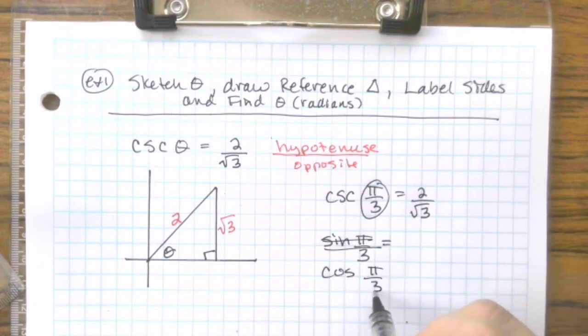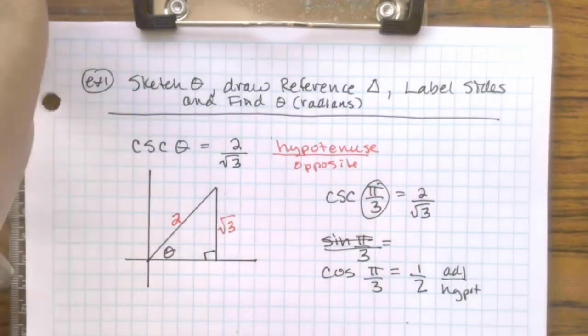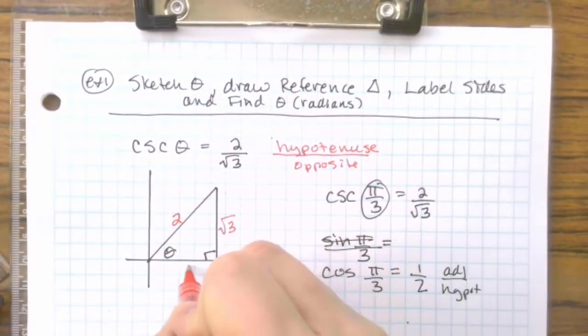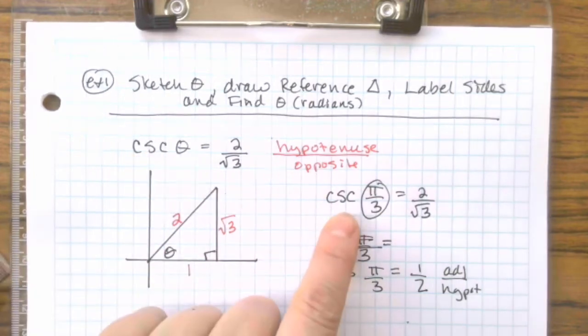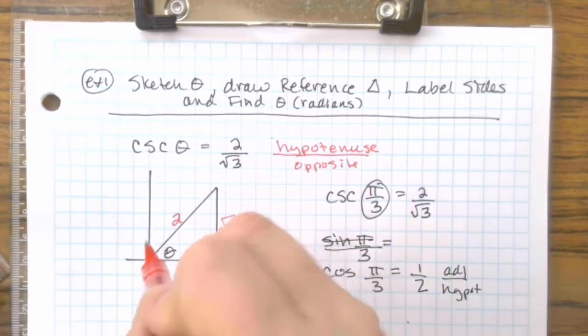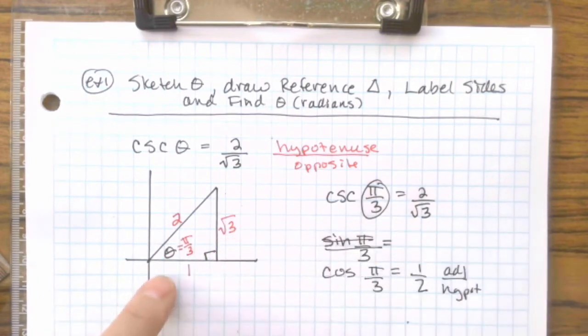And that is adjacent over hypotenuse, which means my adjacent side here has to be a 1. So by identifying your memorized angle, you figure out what theta is. And theta was π/3. And then the missing side, if it's adjacent, you pick something with adjacent in it.